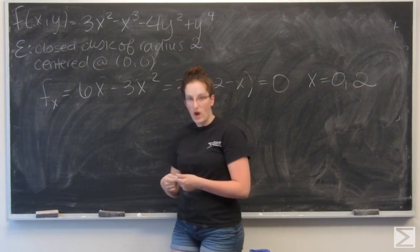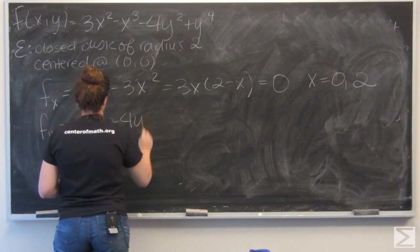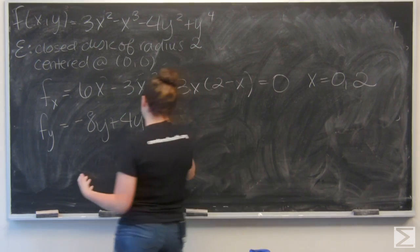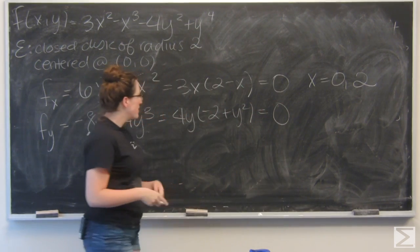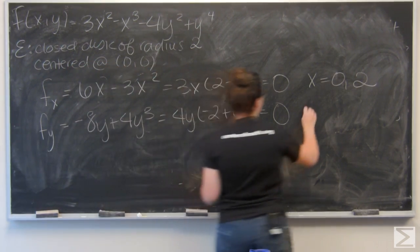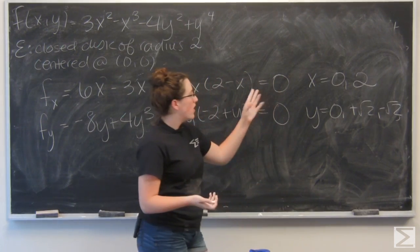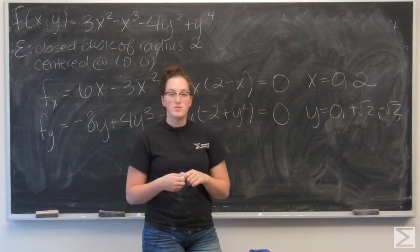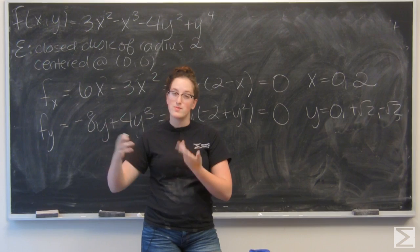Now let's do the same for f sub y. f sub y equals negative 8y plus 4y to the third. Factoring out a 4y and setting it equal to 0, this time I get three values for y: 0, positive square root of 2, and negative square root of 2. Now I want to write out all the points where the gradient equals 0 — all combinations of x and y — and check all of the function values of these points.